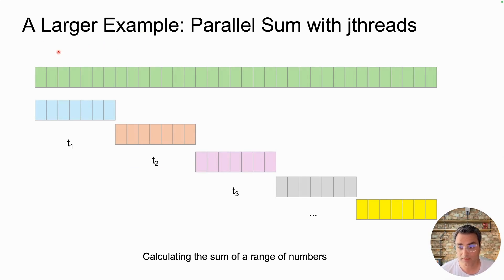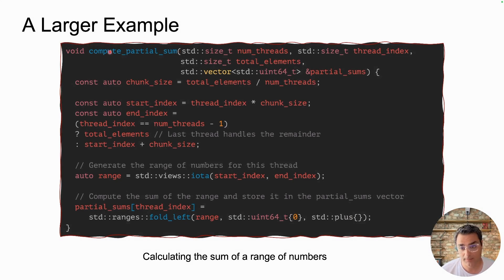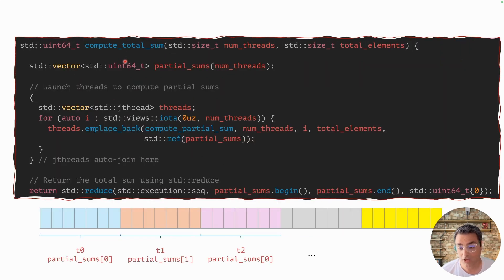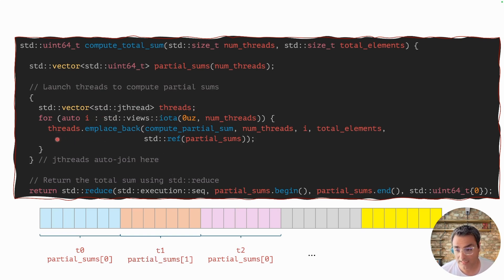Now let's see a larger example. In my previous videos I showed an example where we calculate the sum of a range of numbers by splitting the range into multiple threads — each thread calculates a partial sum and then we add up all partial sums to get the total. To implement this using jthreads, we first create a worker function. The worker function calculates the start and end of its chunk, then uses std::ranges::fold_left to calculate the partial sum and store it in the partial sum vector with the thread index. The interesting part is that we create a vector of jthreads and each thread is put inside the threads vector.